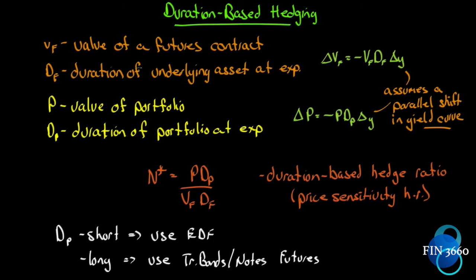The optimal hedge for any given portfolio with these variables is P times DP over VF times DF. What we're saying here is if we look at just the first part of this and you go back to chapter 3, that's your optimal hedge ratio. Let's say we're hedging out 10 million dollars and each contract is for 1 million dollars. Well, 10 million divided by 1 million is 10. But what we're doing over here is we're making this hedge ratio duration-based.